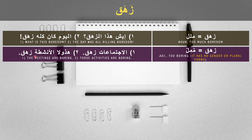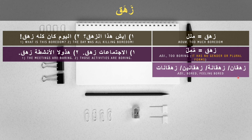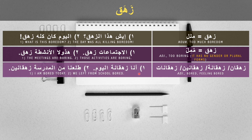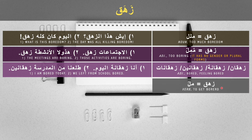As an adjective describing a person feeling bored, we use: 'zahgan' for singular masculine, 'zahgana' for singular feminine, 'zahganin' for plural masculine or mixed, and 'zahganat' for plural feminine only. For example, 'ana zahgana alyom' means I am bored today (feminine speaker), and a masculine speaker would say 'ana zahgane'. Another example: 'talaana minal madrasa zahganin' — we left school feeling very bored.